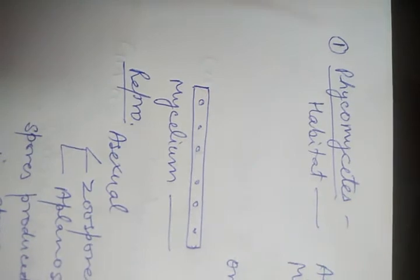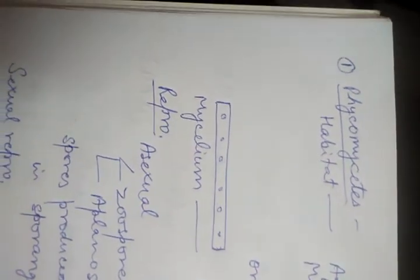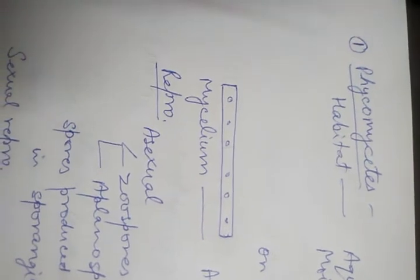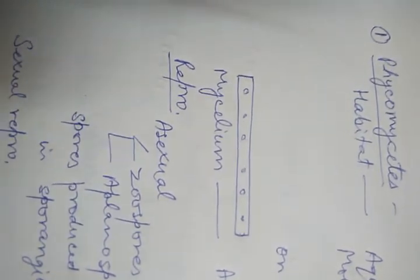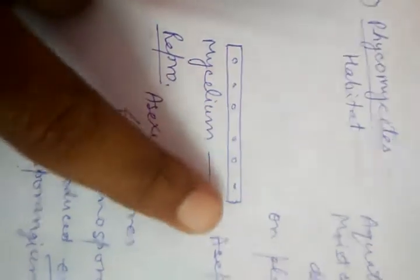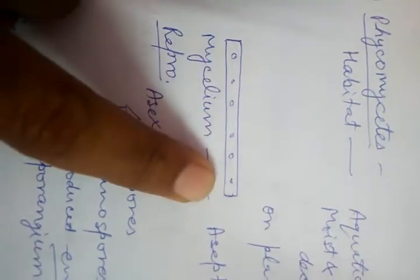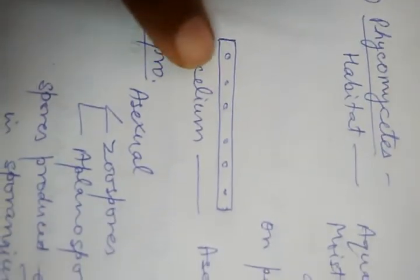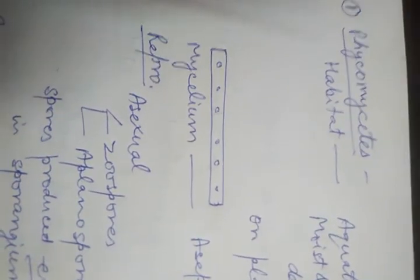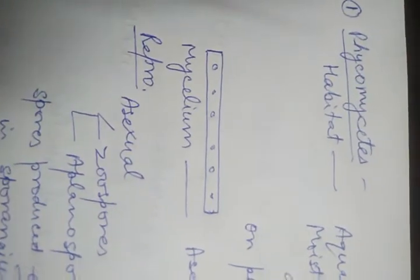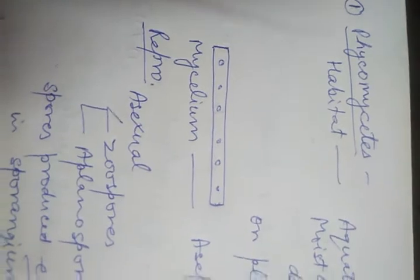The first class is Phycomycetes. They are multinucleate — their cell body contains many nuclei in a single protoplasm. This kind of arrangement is called multi-nucleate or coenocytic. They have mycelium which is coenocytic and there is no septa or cross wall present — that means they are aseptate. So Phycomycetes fungi are aseptate and coenocytic.